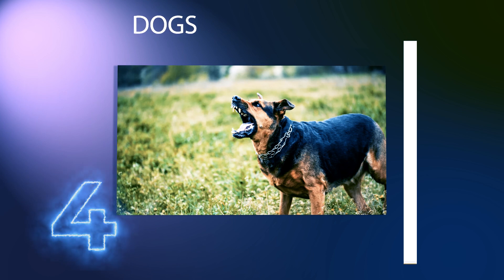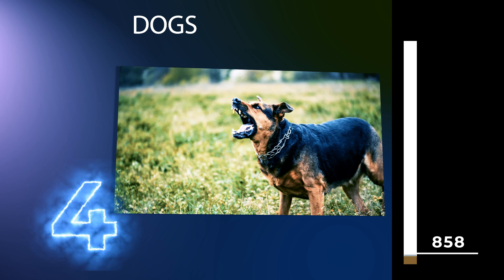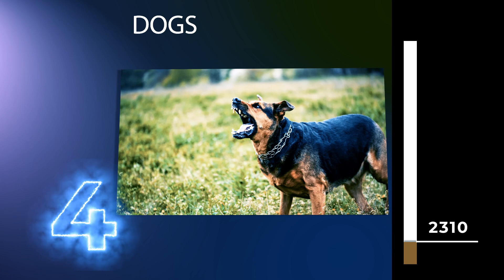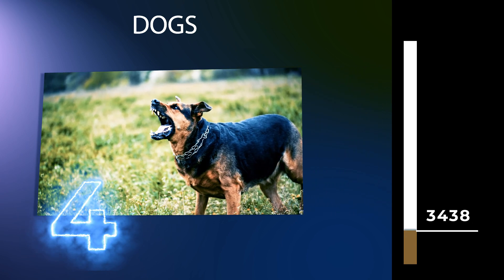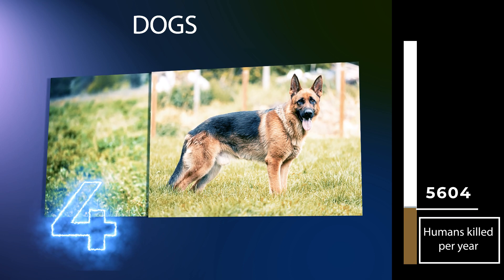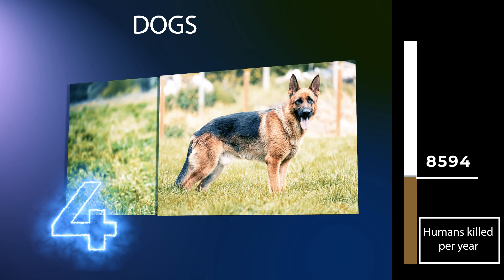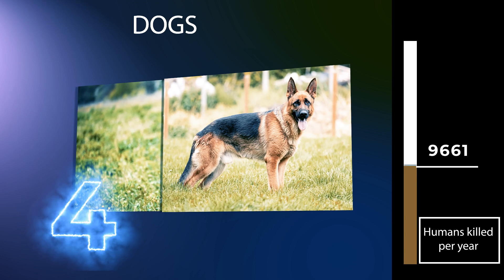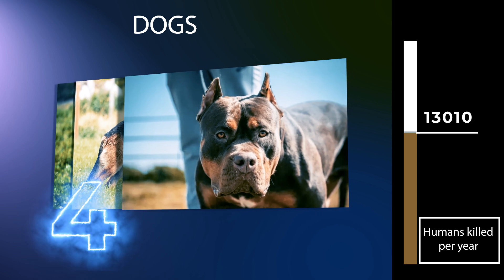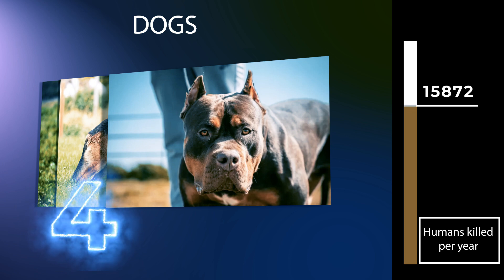The dog is a domesticated descendant of the wolf, derived from extinct Pleistocene wolves, and the modern wolf is the dog's nearest living relative. The dog was the first species to be domesticated by humans. Rabies is a disease for which dogs are the most important vector. Significant dog bites affect tens of millions of people globally each year. Children in mid to late childhood are the largest percentage bitten by dogs, with a greater risk of injury to the head and neck, and have the highest death rate.